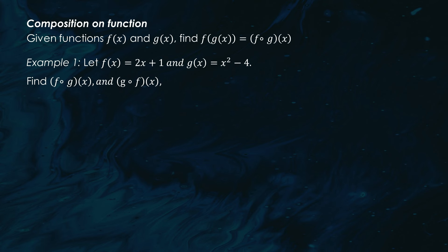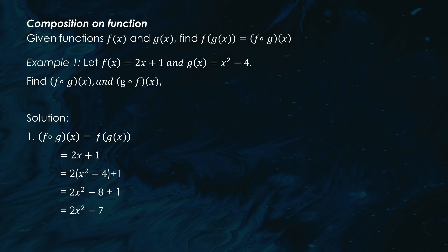Suppose f(x) = 2x + 1 and g(x) = x² − 4. We are asked to find f ∘ g(x) and g ∘ f(x). For f ∘ g(x), we substitute g(x) into f(x): f(g(x)) = 2(x² − 4) + 1 = 2x² − 8 + 1. Therefore, f ∘ g(x) = 2x² − 7.